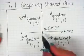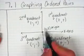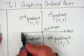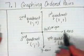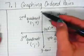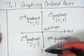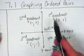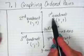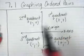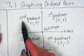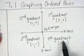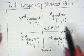We call the center point the origin, (0, 0). Remember that this is your x-axis and this is your y-axis. We have four quadrants: this is the first quadrant, this is the second quadrant, this is the third quadrant, and this is the fourth quadrant.